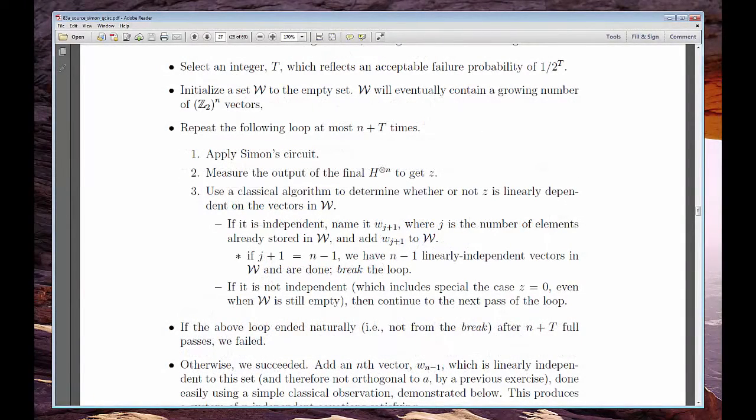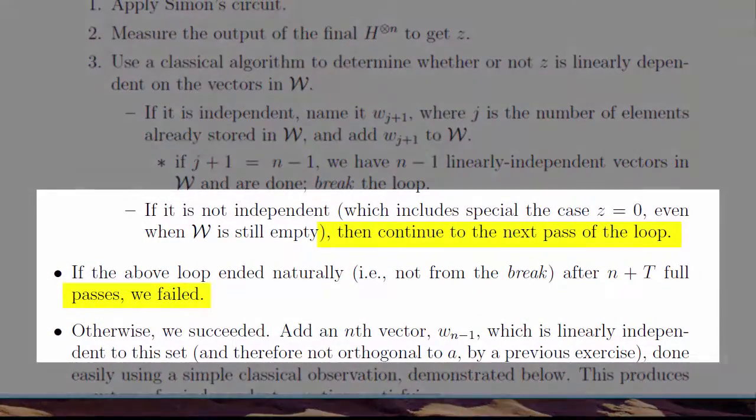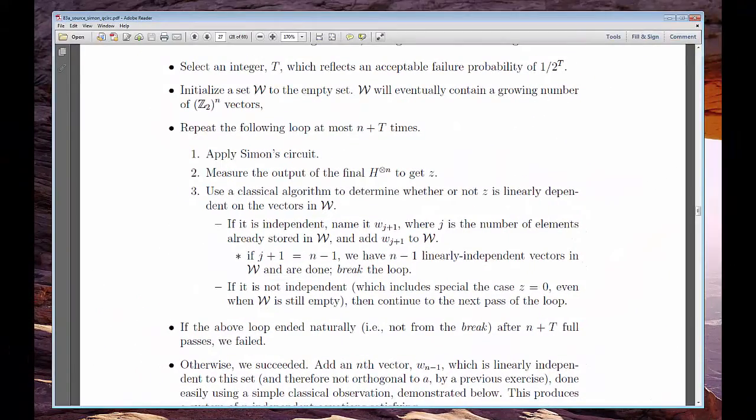Grown-up problems rarely yield deterministic single evaluation solutions. Simon teaches us how to accept a small possibility of failure, sample the circuit an indeterminate number of times, and still converge on an answer polynomial fast.